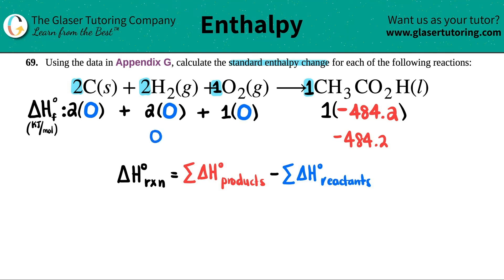Now we're ready to do our formula. The delta H for the whole reaction would be the products, negative 484.2, minus the sum of the reactants, which was zero. So this one was pretty easy. Delta H for the whole reaction would just be negative 484.2. Just know that the units for delta H is always kilojoules per mole.